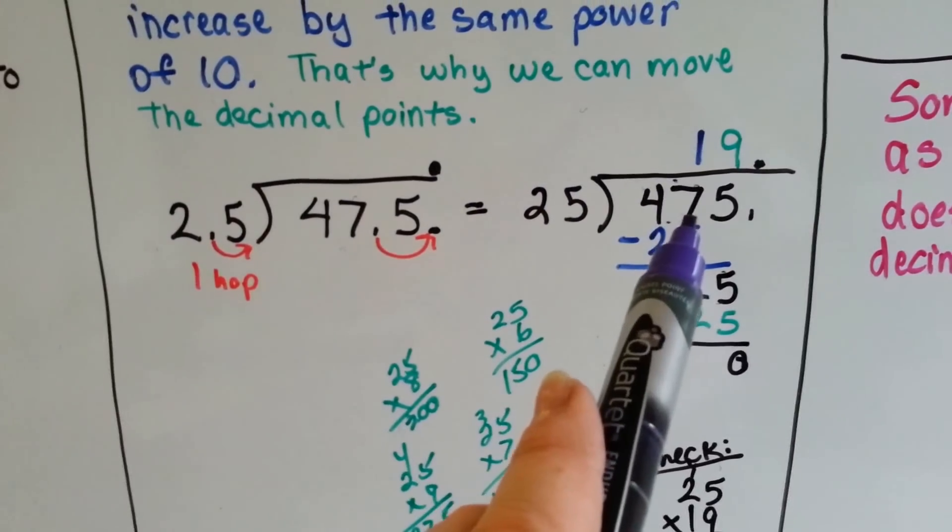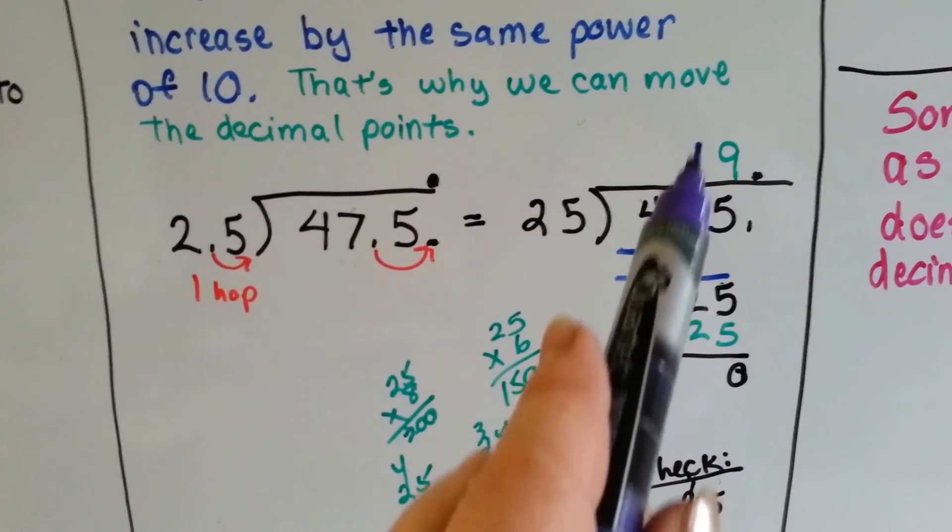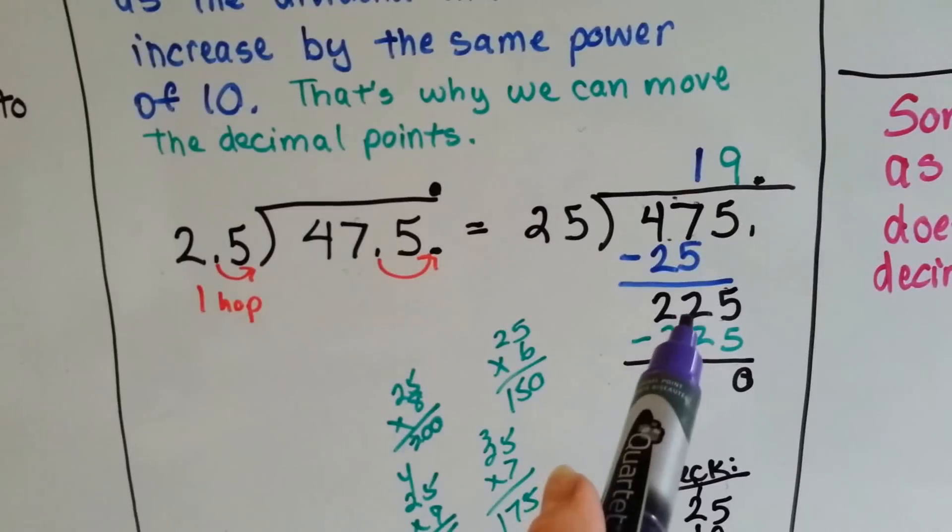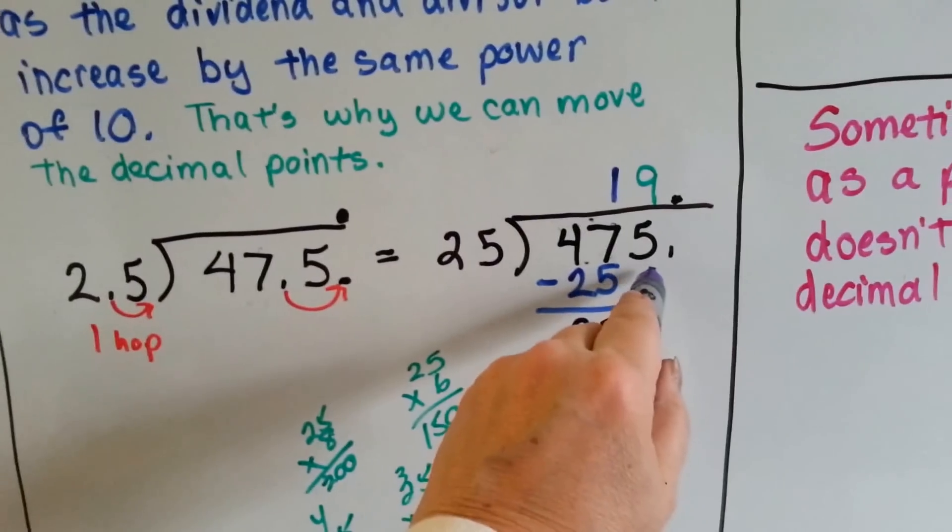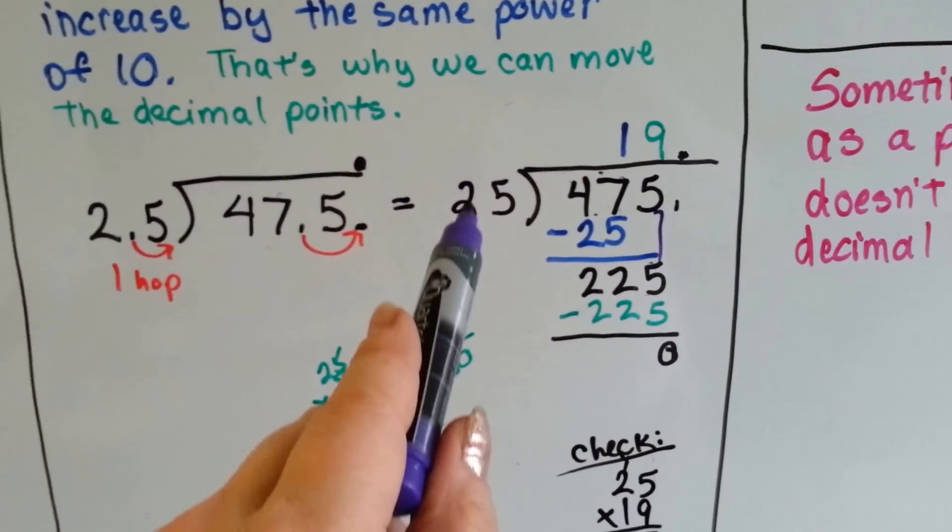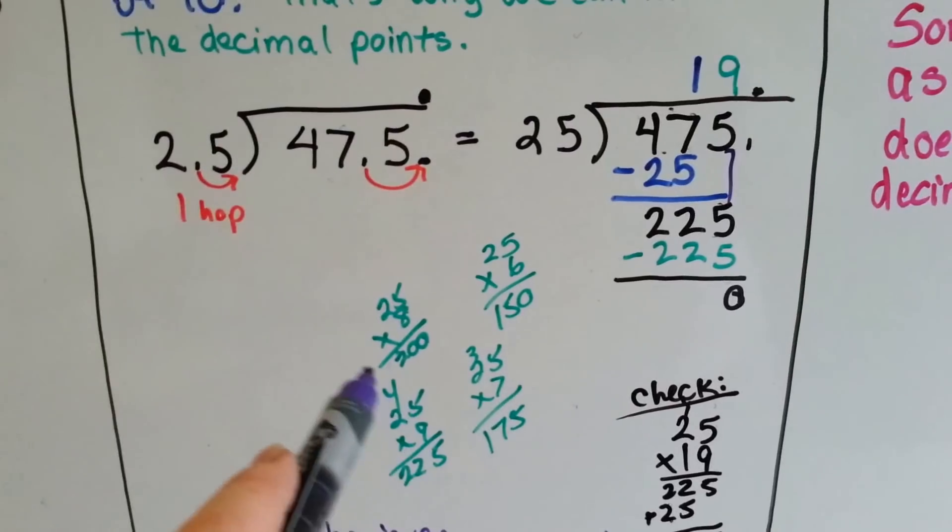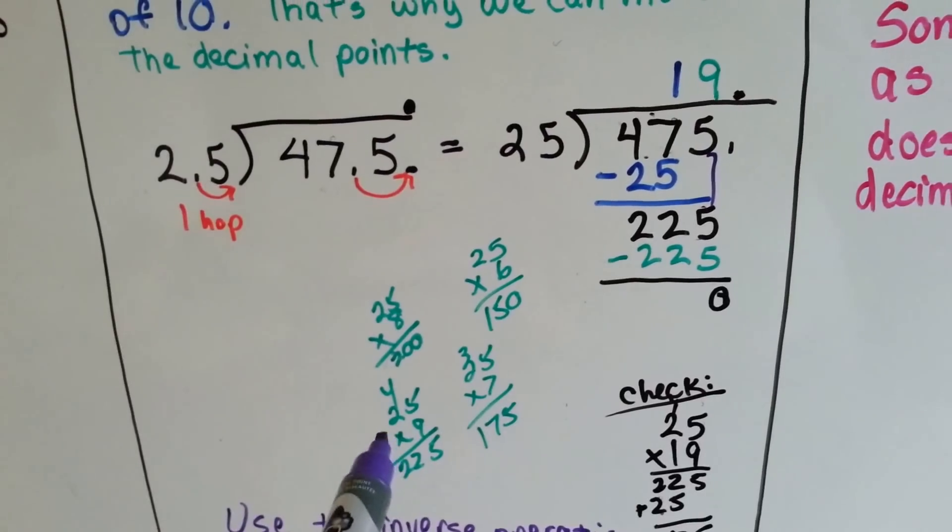25 goes into 47. Well, if it was a 50, it could have gone in twice. But it's only a 47, so it's going to go in one time. We do the 1 times 25, we do our subtraction, and we get 22. It's the 5's turn to come down. 25 goes into 225. I did a little math on the side, which is how I like to do it instead of estimating.